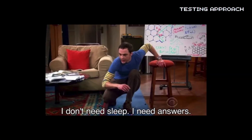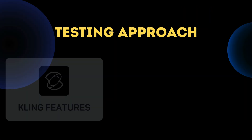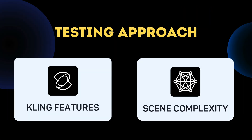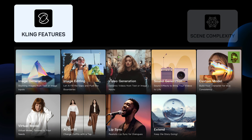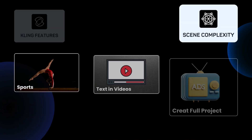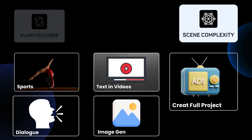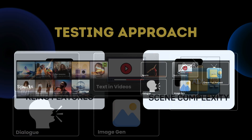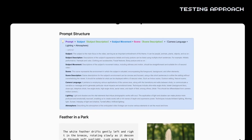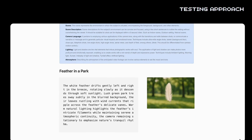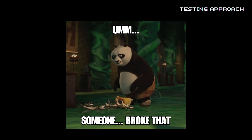To get real answers, I tested from two angles: all of Kling's features and different scene complexity levels. I've got all my prompts ready in Notion. Let's see where this breaks.